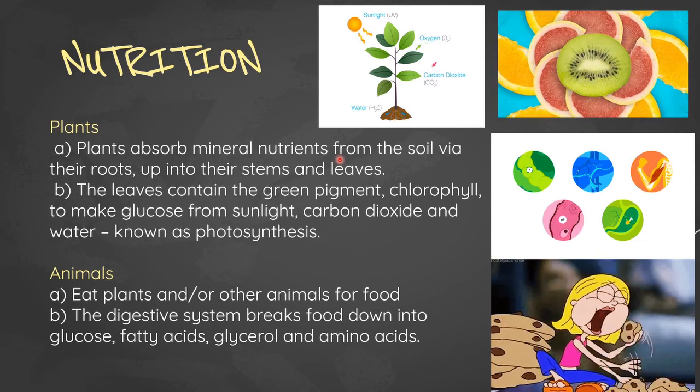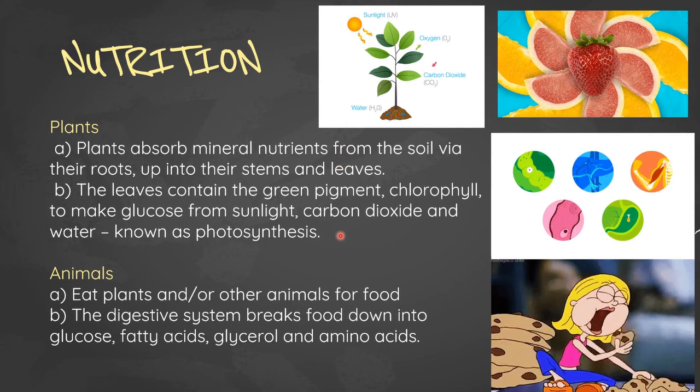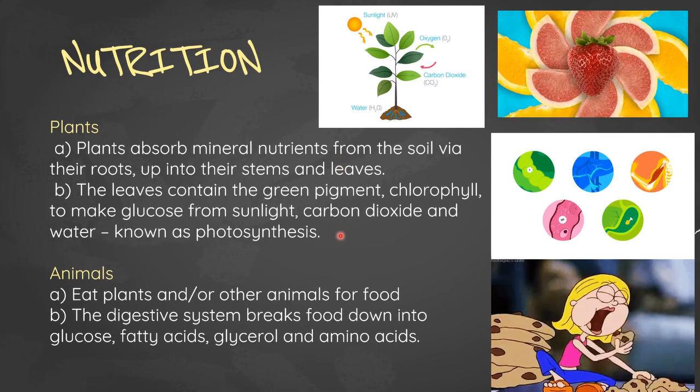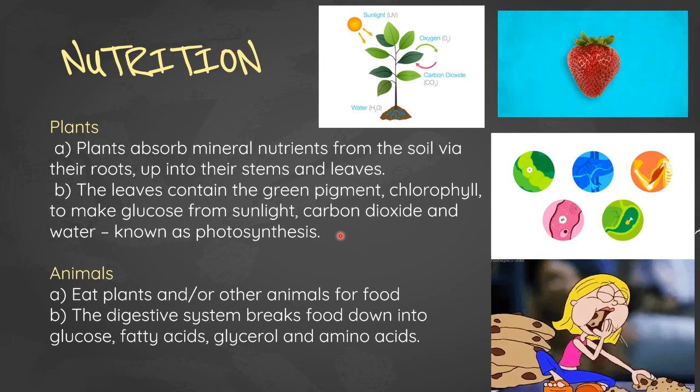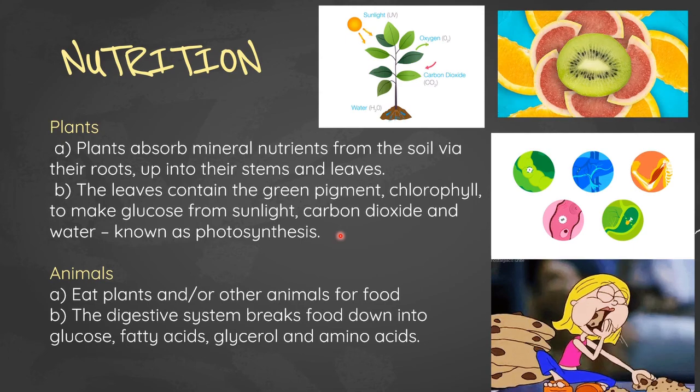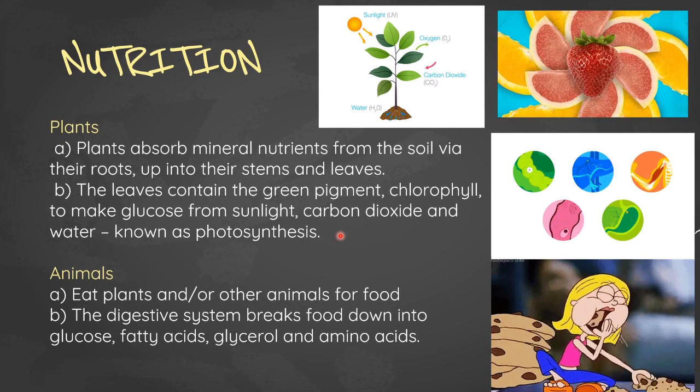In animals, animals eat plants and/or other animals for food. The digestive system is what breaks down the food into glucose, fatty acids, glycerols, and amino acids, which is the simple forms of the food.